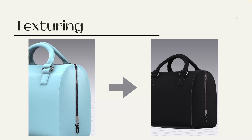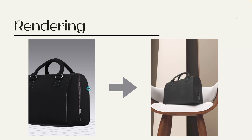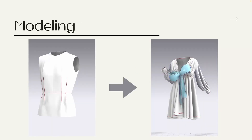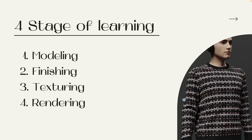The fourth stage is called rendering. In rendering you create environments and your environment interacts with light. Right now this bag is not interacting with light, which is why it doesn't look realistic. When it interacts with light it looks much better. So these are the four different stages when you build a 3D product.